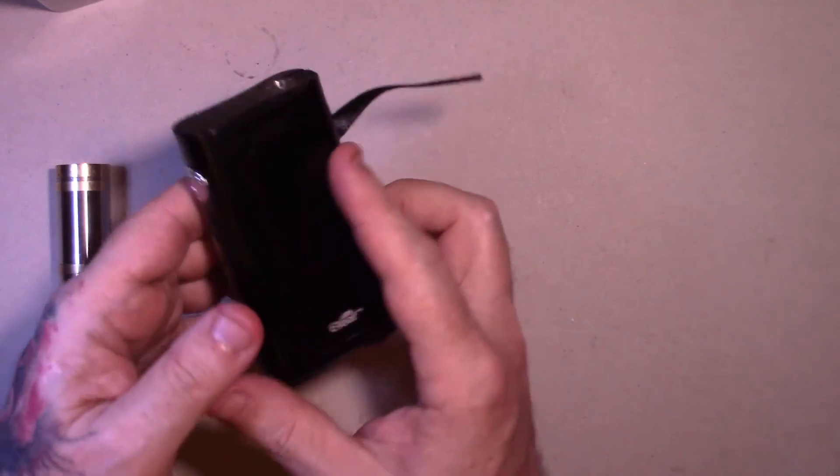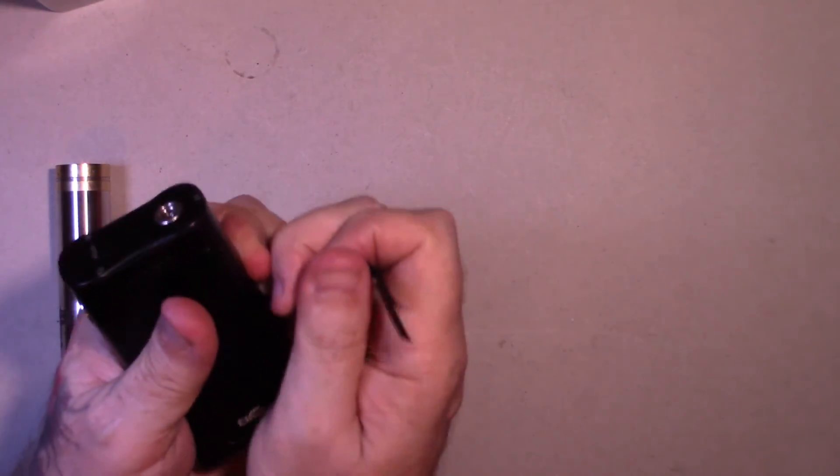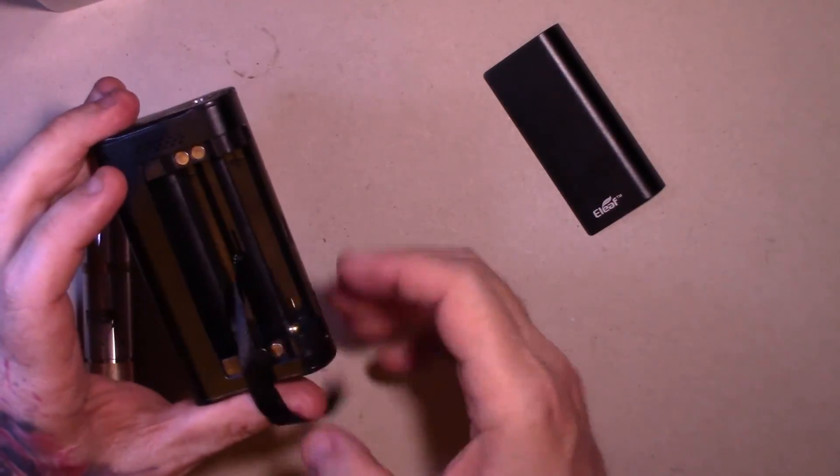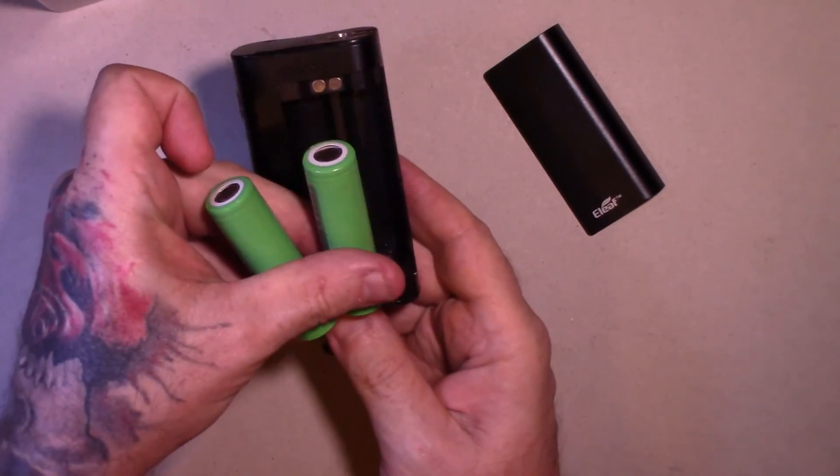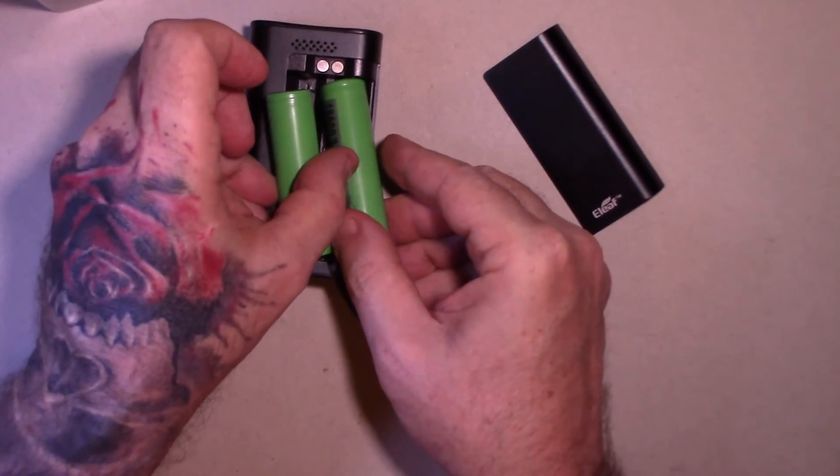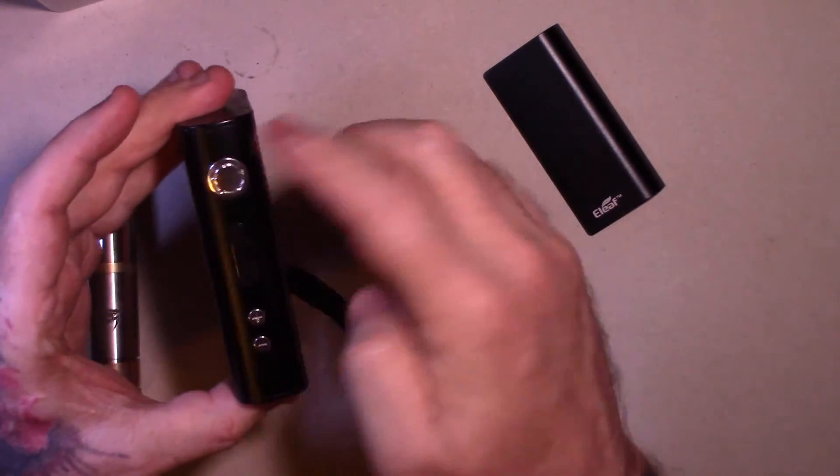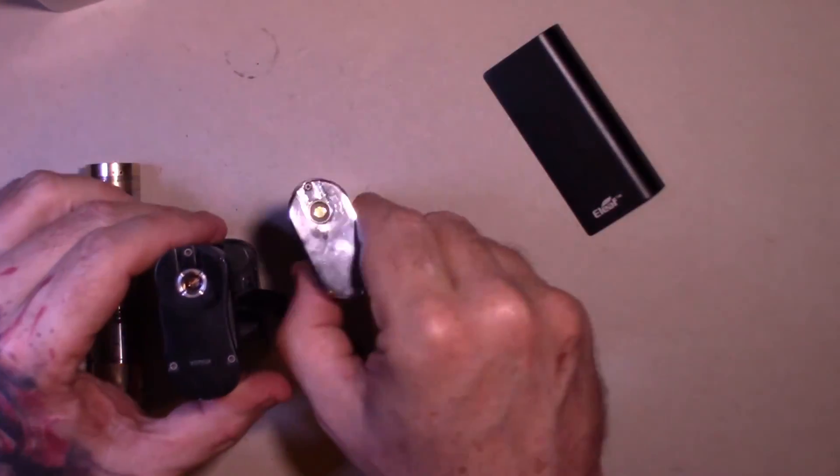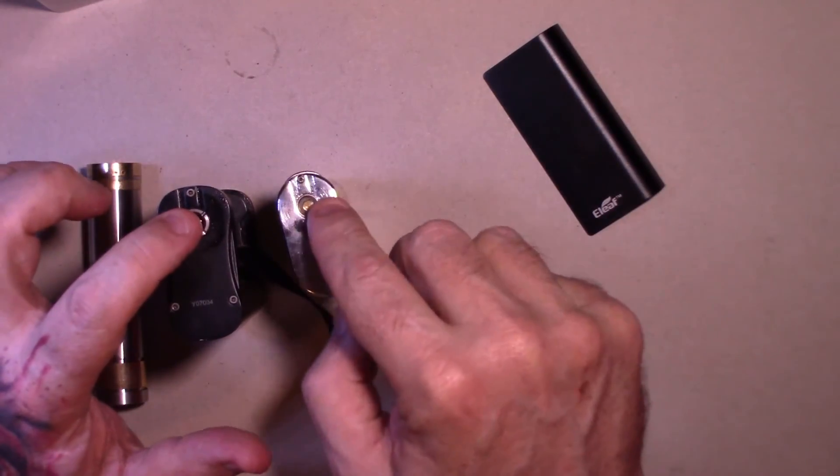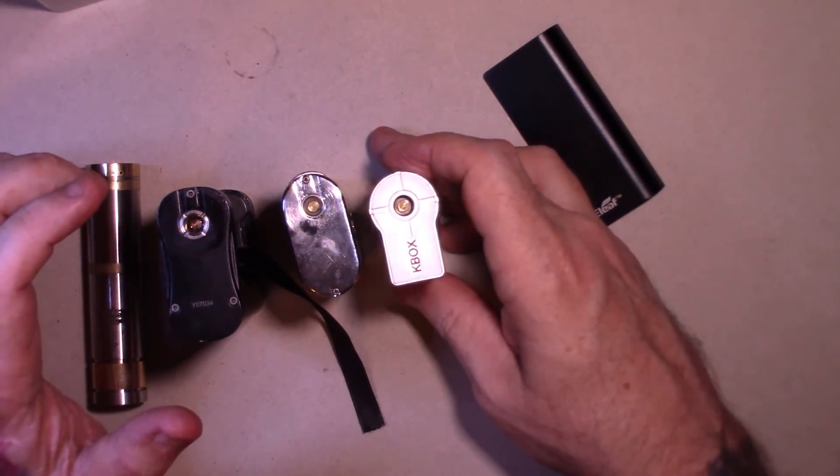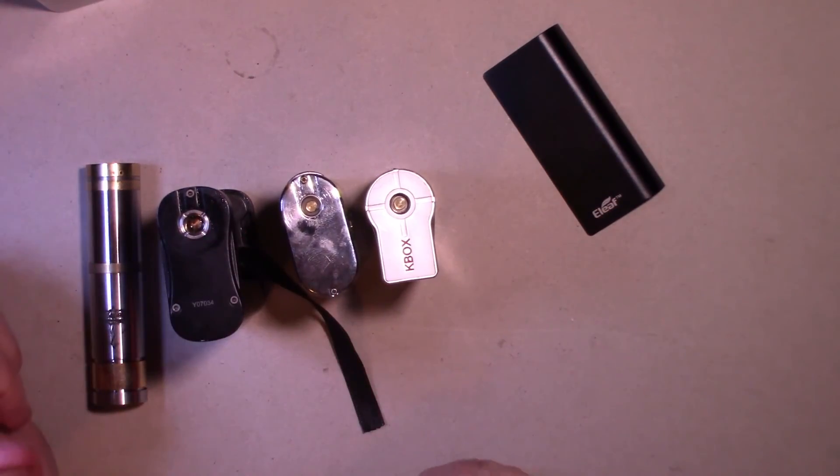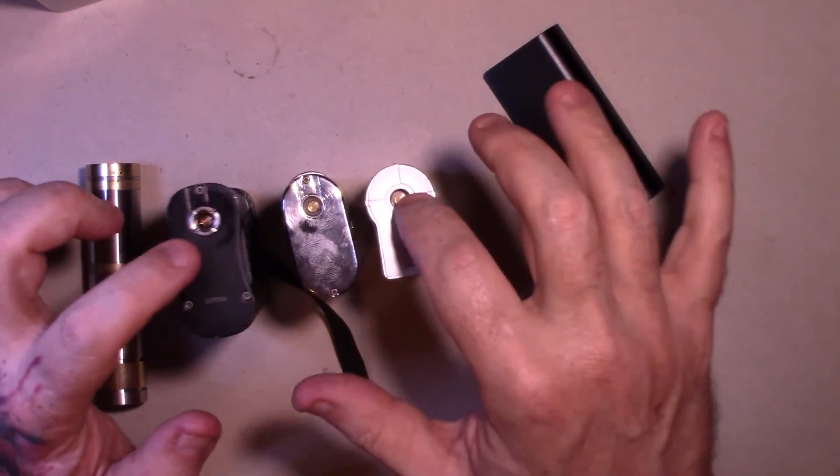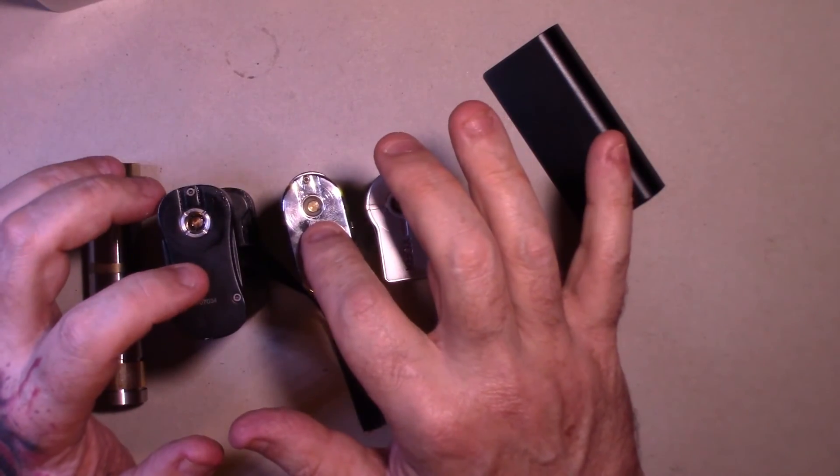Again, another regulated mod, higher wattage. The difference with this is it takes two 18650 batteries. Again, you have your fire button, you're up and down, and your menu will be here. You notice they all have the same connector at the top. So they will accept any and all tanks, RDAs and RTAs.